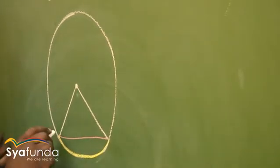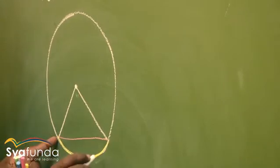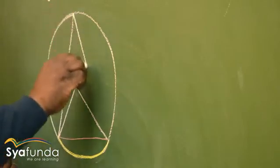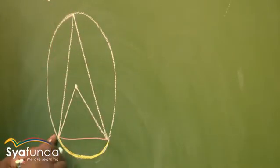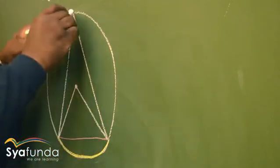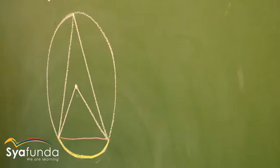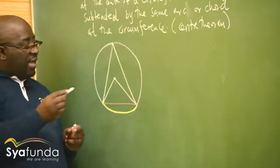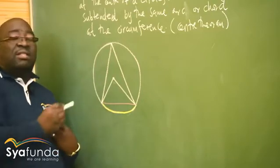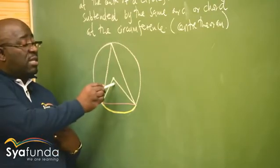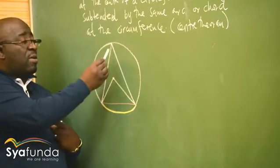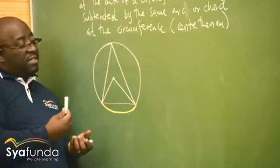Now, if I've got another angle subtended by the same arc or chord at the circumference — the same arc is taking this angle into the circumference, or the same chord is taking this angle into the circumference. The angle at the center is two times bigger than the angle at the circumference. The one at the center is bigger. If the one at the center is 100, the one at the circumference will be 50. This is what this theorem is saying.